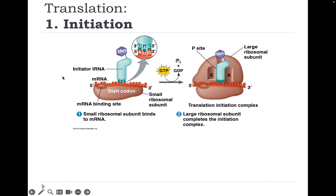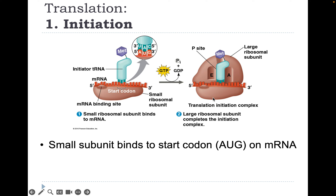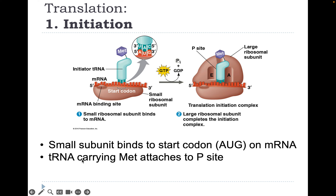Translation, step one: initiation. The small ribosomal subunit is where the mRNA molecule attaches. An initiator tRNA comes in to get things started. The small subunit binds to the start codon AUG on mRNA — every mRNA molecule starts with AUG. tRNA carrying methionine — the amino acid coded for by AUG — attaches to the P site. Methionine is always the first amino acid added to a polypeptide chain. Then the large subunit attaches to complete the initiation complex.